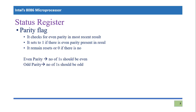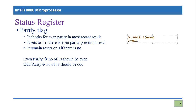Even parity means the number of ones in the result is even. For example, the binary number three is written as 0011 — that has two ones, which is even parity. For the number seven, you have 0111, which has three ones — that is odd parity. So for three, the microprocessor will indicate the parity flag is one because it is even parity. For seven, the parity flag will remain zero because it is odd parity.